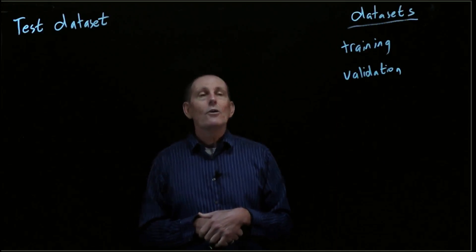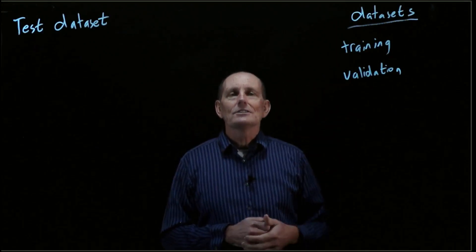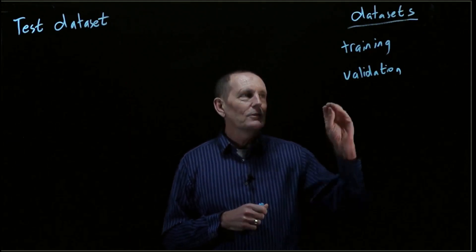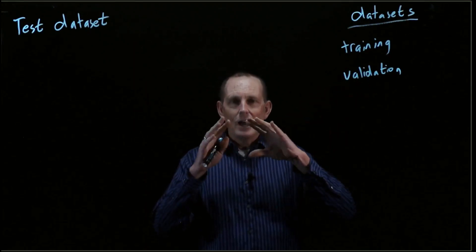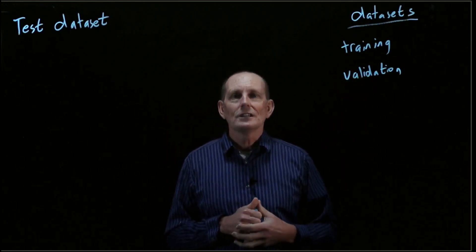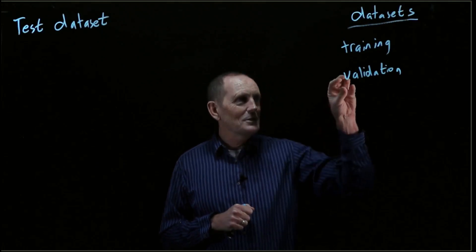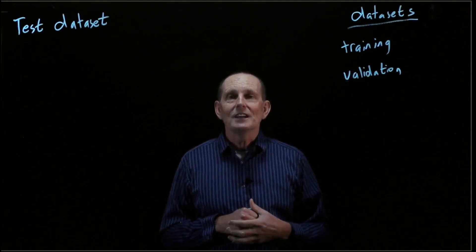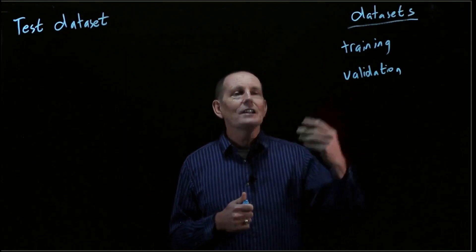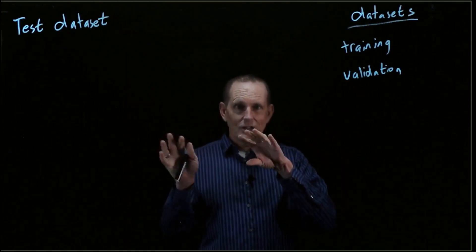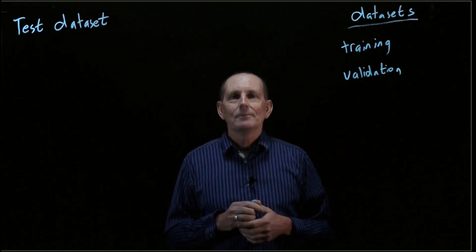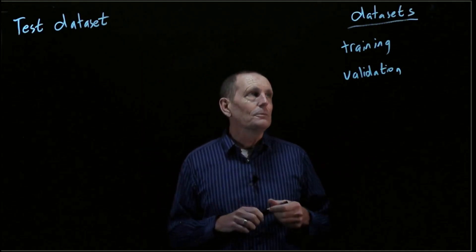We do not anymore know how well our trained model is going to actually generalize in the real world, because we've tried over and over again until we got just the set of parameters that happens to work for this validation data set — which might be peculiar to the particular elements in it. We may have also looked at which of our training examples in the validation data set fail, and gone to fix those.